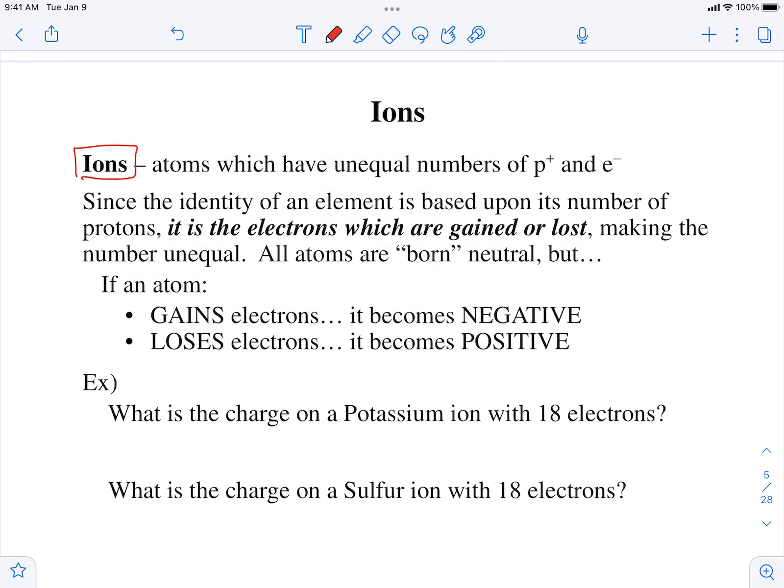An ion is when you have unequal numbers of protons and electrons. Normally we just said that protons and electrons are the same, but there are lots of times where atoms will either gain or lose electrons.